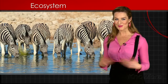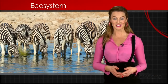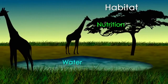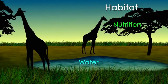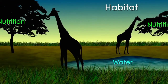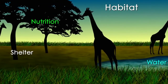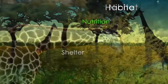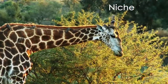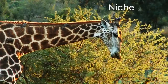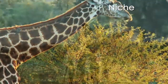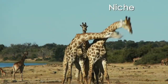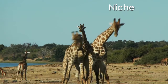Two of the most important concepts in the study of ecosystems are niche and habitat. A habitat is a place where an organism lives. Organisms must get nutrition, shelter, water and the other things they need to survive from their habitat. Niche is an organism's special role in the ecosystem — what and how something eats, how it behaves, where it lives. All of these things define an organism's niche.